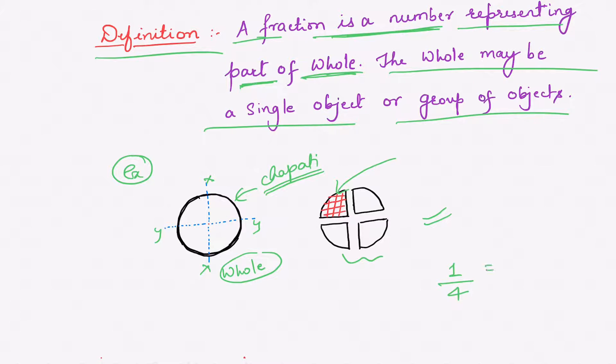So, here we can write shaded area. What is shaded area? So, shaded area is out of four parts, one is shaded. Therefore, shaded area is one by four. So, this is nothing but the representation of shaded area, which is in the form of fraction, indicating that out of four parts, one part is shaded.